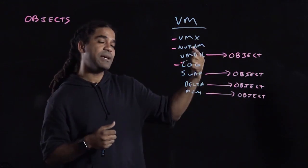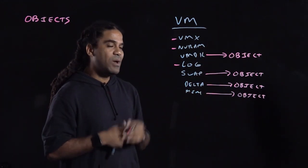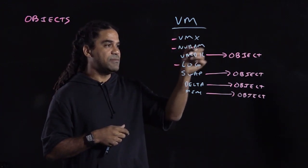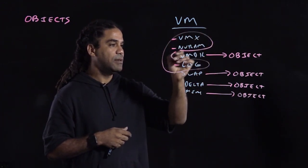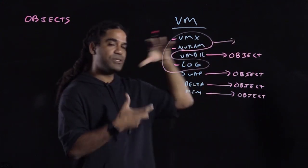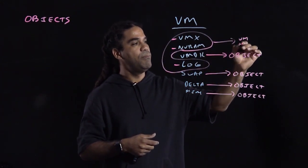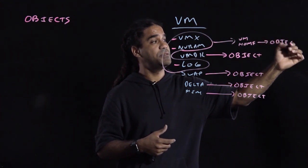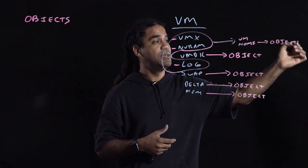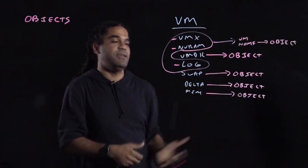Now let's go back to the small files, like the VMX file, the NVRAM, and the log file. What vSAN does is take all these files and put them together into something called the VMHome. And guess what? That's also an object. So that's how objects relate to vSAN and your VM.